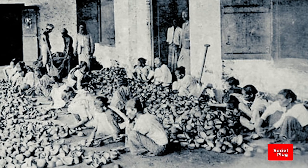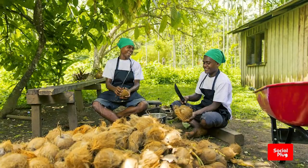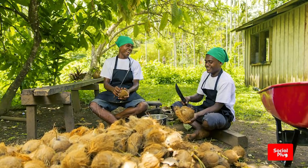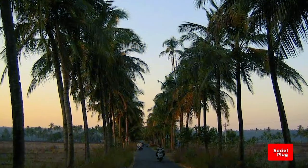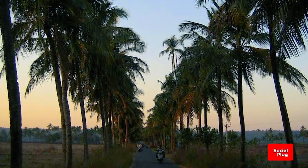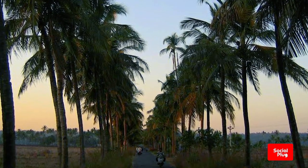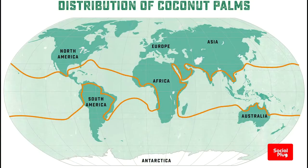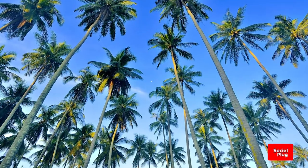Coconuts have been used by humans for thousands of years and may have spread to their present range by Pacific Island settlers. The evolutionary origin of the coconut is still under dispute, with theories stating that it may have evolved in Asia, South America, or in the Pacific Islands.